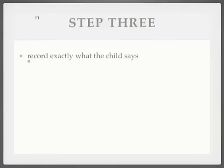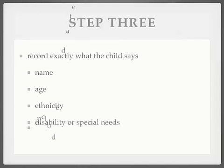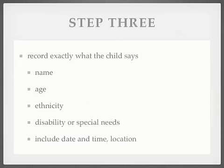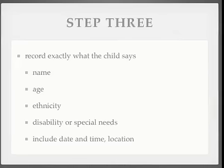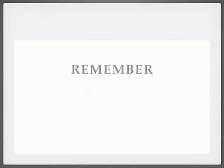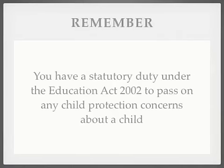Step 3: as soon as possible, record what was said, what you have observed, what your concerns are and what you have done. Ensure you have included exactly what the child said, including dates and times. This record should be signed and dated and kept in a safe and confidential place. And remember, you have a legal duty under the Education Act 2002 to pass on your concerns.